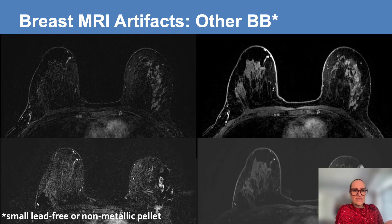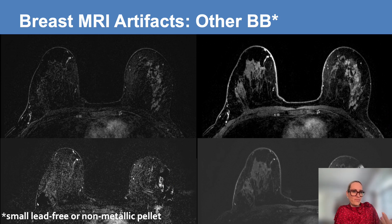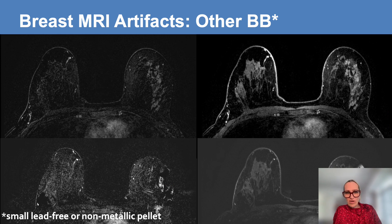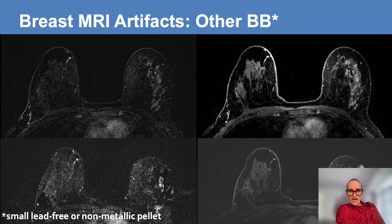Other artifacts come from BBs — pellets placed on the skin to highlight a palpable area of concern — which can produce a huge artifact. Send the patient out, remove the BB, note where the area is, and then image without it.